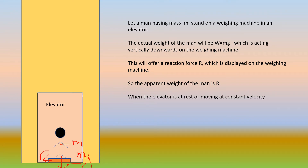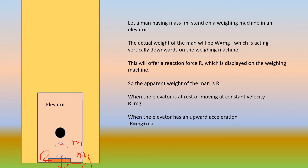When the elevator is at rest or moving at constant velocity, R is equal to Mg. When the elevator has an upward acceleration, R will be equal to Mg plus MA. Whereas when the elevator has a downward acceleration, R is equal to Mg minus MA. Today let us see all these cases in detail.